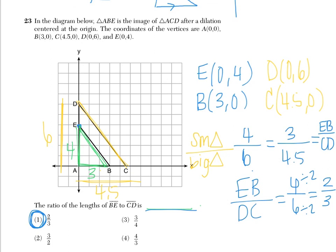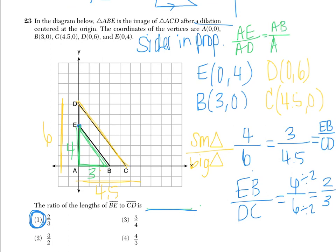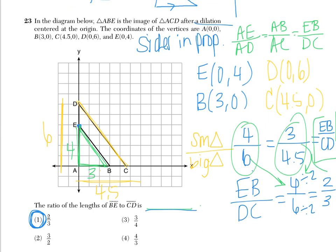Let me explain that one more time. In a dilation, our sides are in proportion, which means any proportion set up between corresponding sides is equal to any other proportion of corresponding sides. So AE over AD equals AB over AC, which also equals EB over DC. AE over AD gave us 4 over 6, and AB over AC gave us 3 over 4.5. Either way you reduce, you still get 2 thirds.